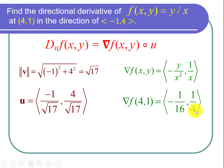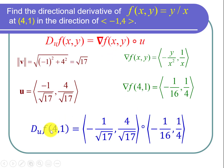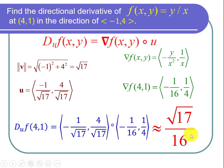Now let's put everything together by dotting our gradient with our unit vector. D-sub-u of f at 4 comma 1 is the dot product of negative 1 over root 17 comma 4 over root 17, dotted with negative 1 over 16 comma 1 over 4. Computing that dot product gives the square root of 17 over 6, and we're done with the problem.